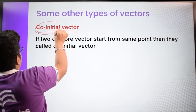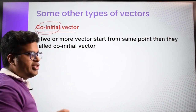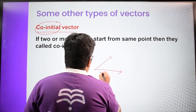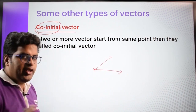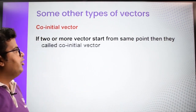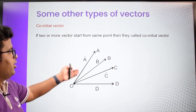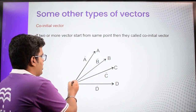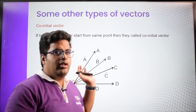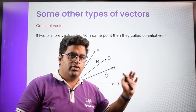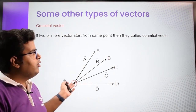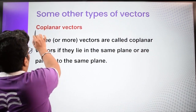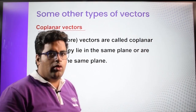Co-initial vectors are two vectors having the same starting point. For example, if two vectors both start from the same point, they are co-initial. From the diagram, vectors A, B, C, and D all start from the origin, so their initial point is the origin — making them all co-initial vectors.